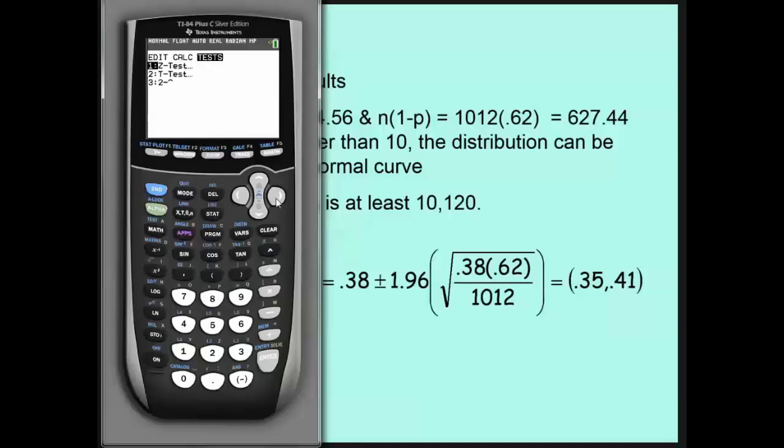I'm going to go back to stat test. And then I'm going to go down to the one prop Z interval. It's between 384 and 385. I'm going to go with 385. You'll see in a minute why it doesn't really matter whether you do 384 or 385. And then type in the sample size, which is 1,012. And then this particular problem, it was a 90% confidence interval. Then I'm going to hit calculate. And it tells me that the P hat was 0.38, which is what we knew. But then it also shows me that the confidence level is between 0.35 and 0.4.